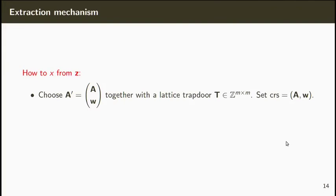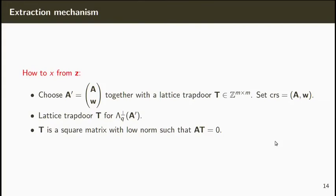To extract X from Z we're going to choose a matrix A' together with a lattice structure. But now, contrary to PVW, we're going to set the CRS as the matrix A, which is the matrix A' except the last row, and W which is the last row of A'. Here, T is a square matrix with low norm such that A' times T is equal to 0.